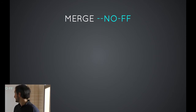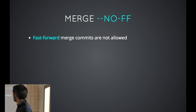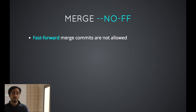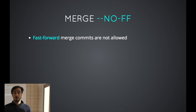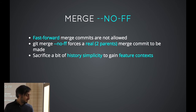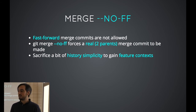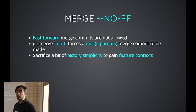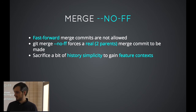Merge NoFF — what does NoFF stand for? It means you can't make fast-forward merge commits. A fast-forward merge commit is what happens, for example, when you do a git pull, which is just git fetch plus git merge. When you use NoFF, you are not allowing fast-forward merges, which means you force a real merge commit with at least two parents when merging a feature branch. Why is it cool? Because when you look at your log in a graph, you see the branches and can easily know when a feature starts, when a feature ends, what the feature was named, etc. You sacrifice a bit of history simplicity but gain a lot of contextuality.